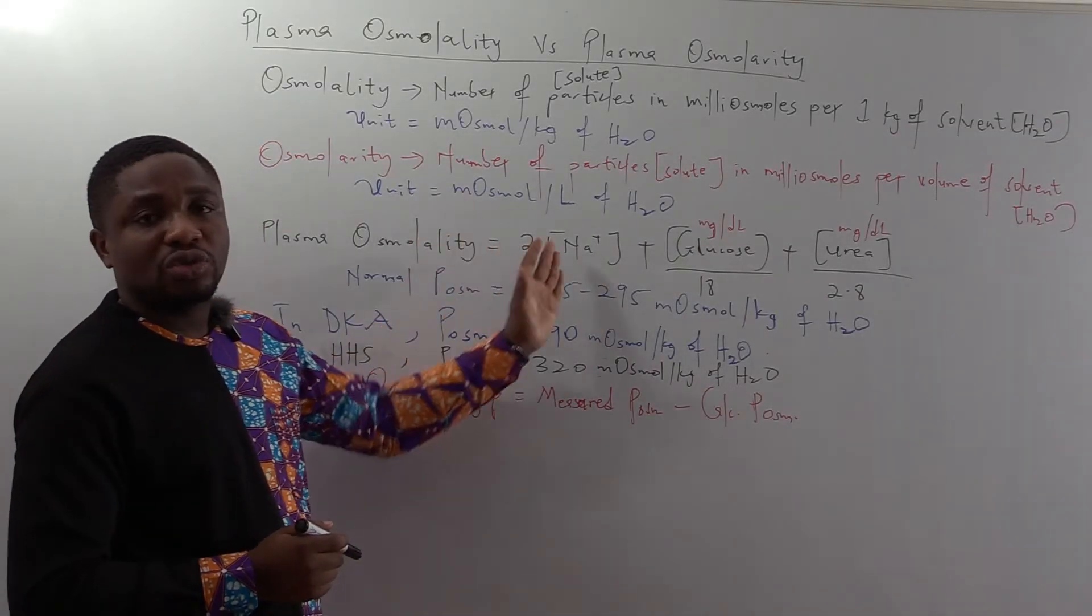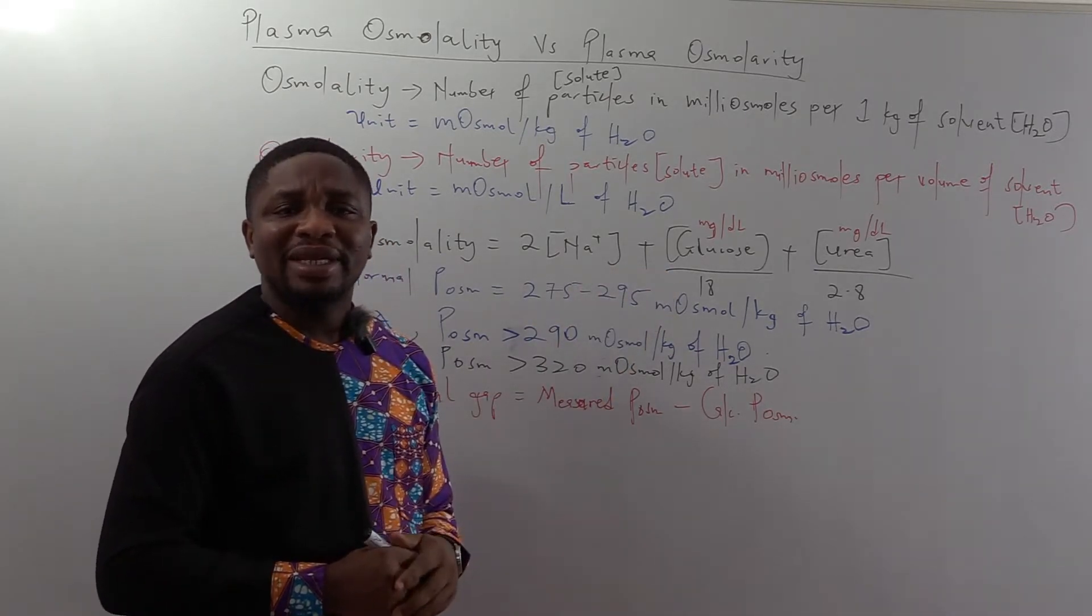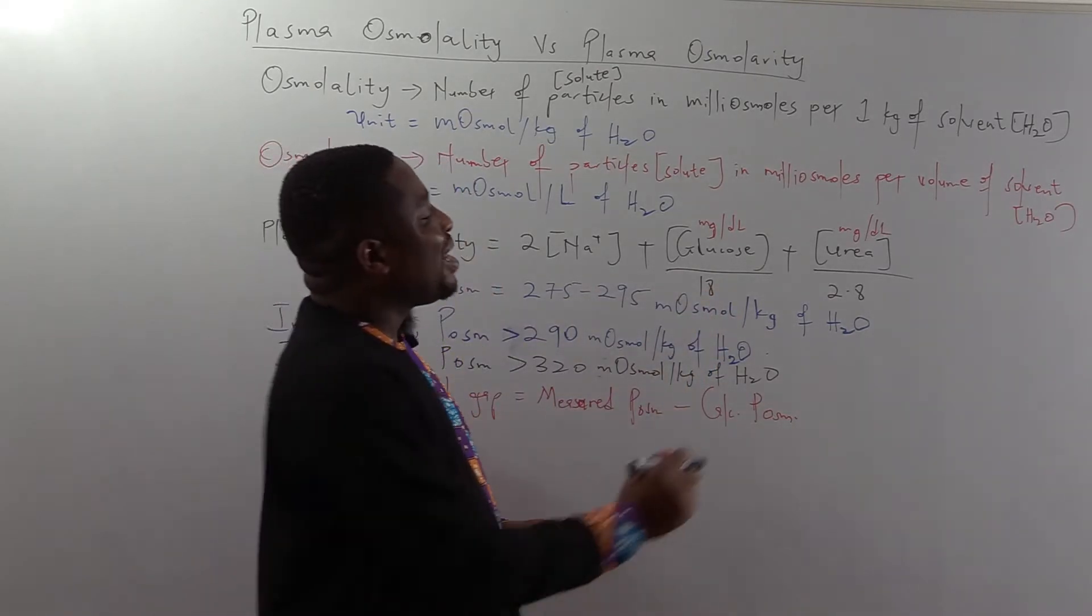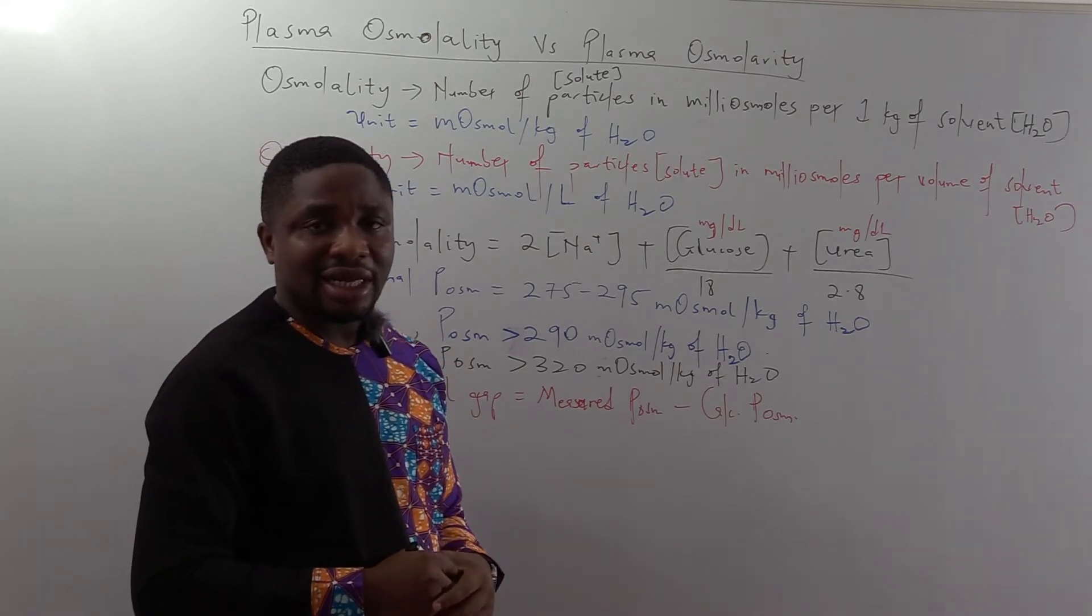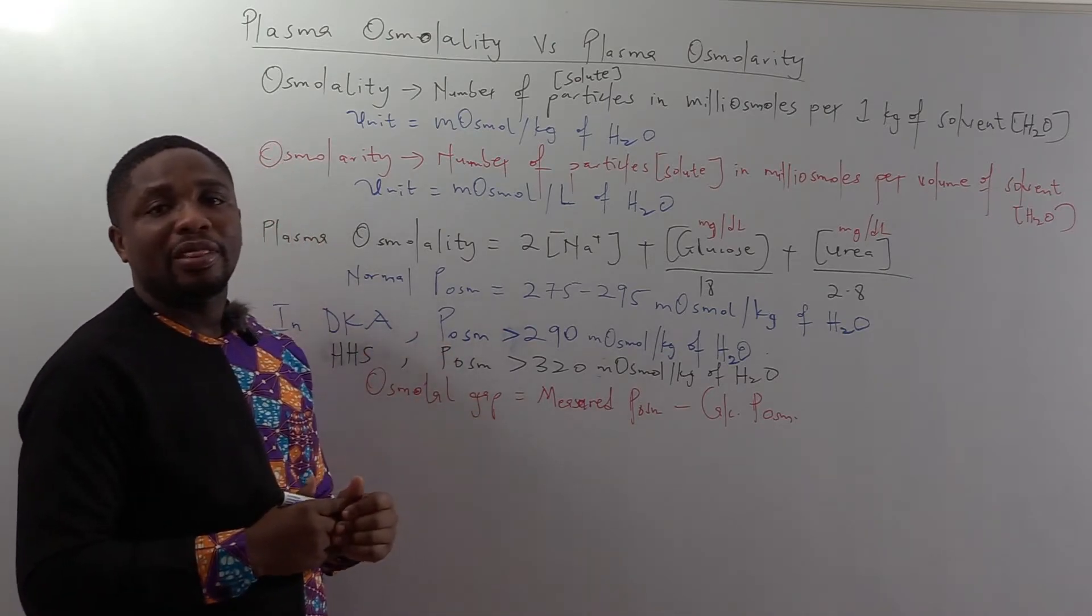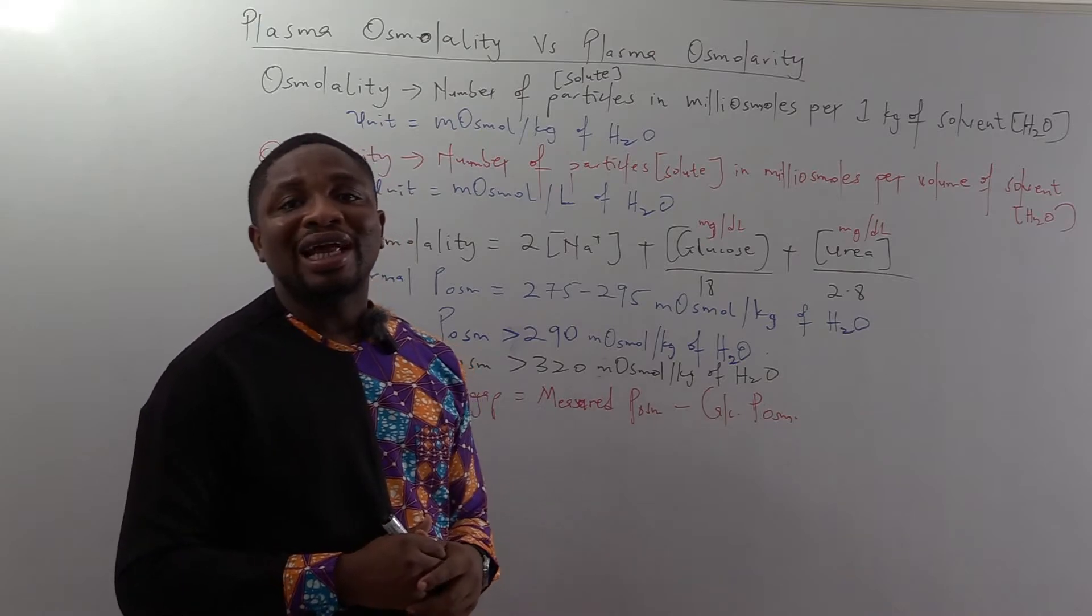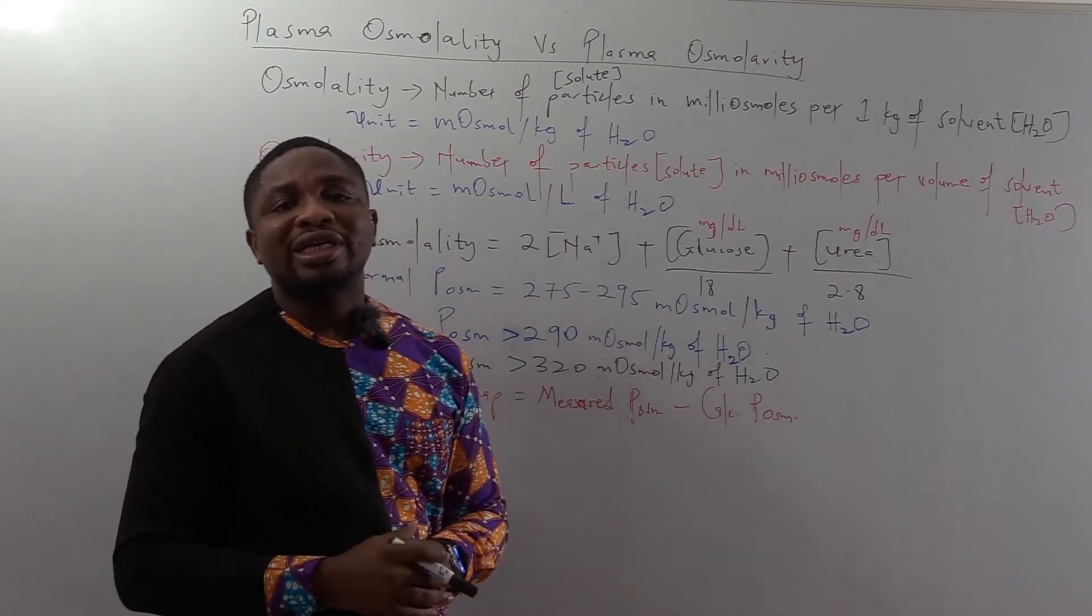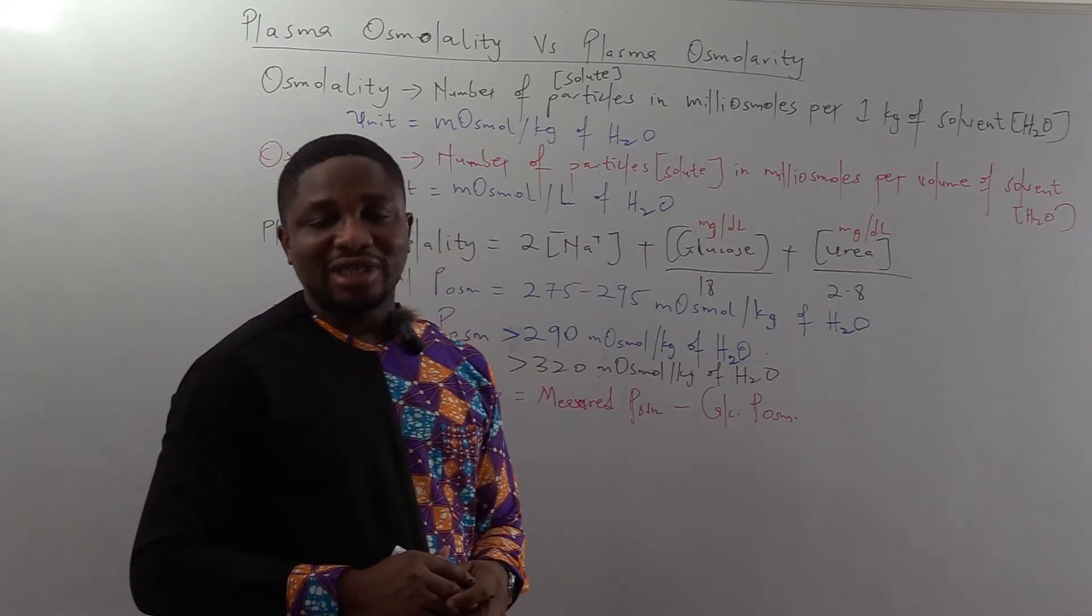That's two times the concentration of sodium plus the concentration of glucose in milligram per deciliter divided by 2.8. The normal plasma osmolality is equivalent to 275 to 295 milliosmoles per kilogram of water.